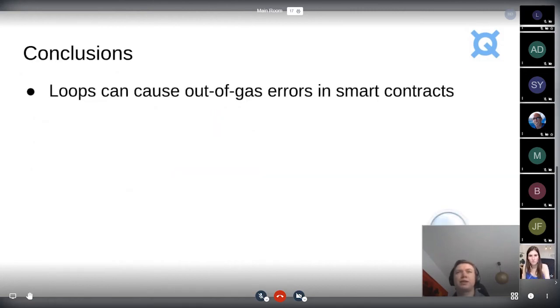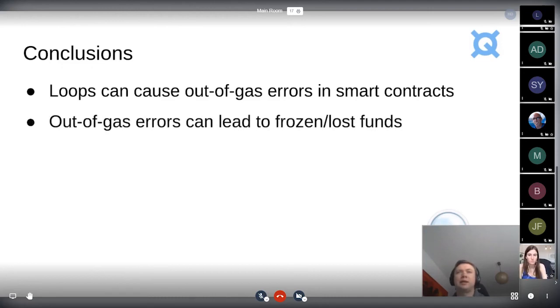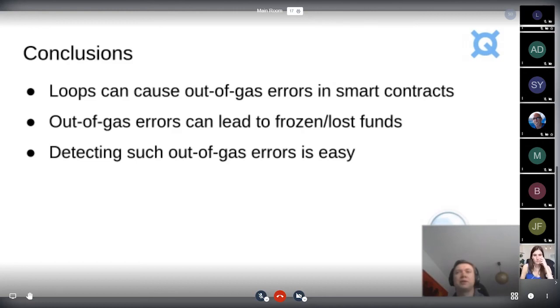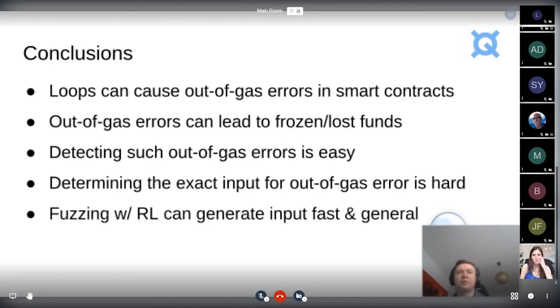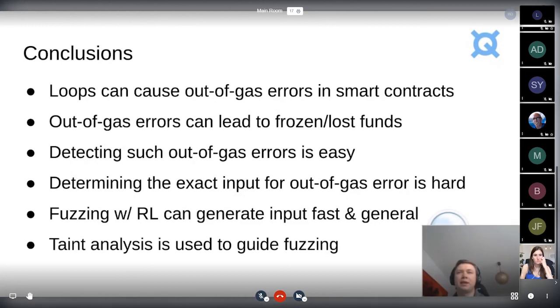In conclusion, probably no loops cause out of gas errors in smart contracts, and these can lead to frozen and hence lost funds. Detecting such problems is quite easy with state of the art tools. However, determining exactly when they would occur with which inputs is harder. And we're taking the approach of fuzzing with reinforcement learning and taint analysis to generate the inputs needed for an out of gas faster and in a more general way. And yeah, we're using taint analysis to guide fuzzing.